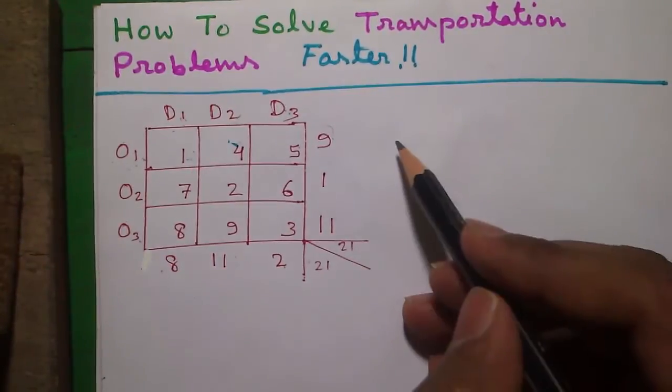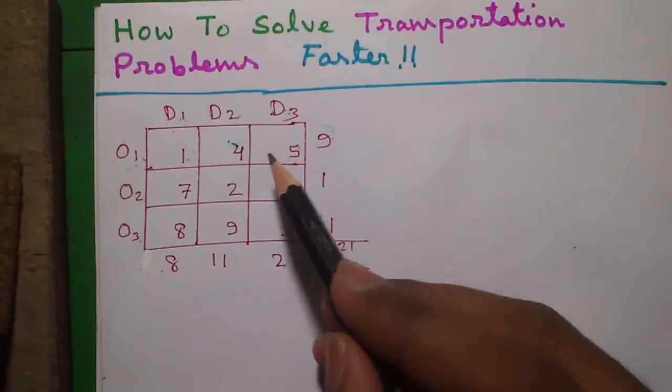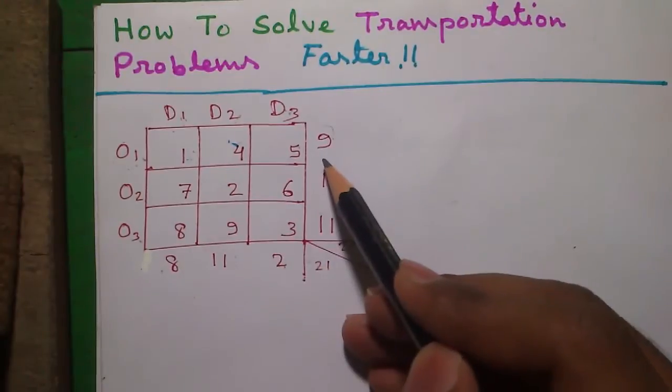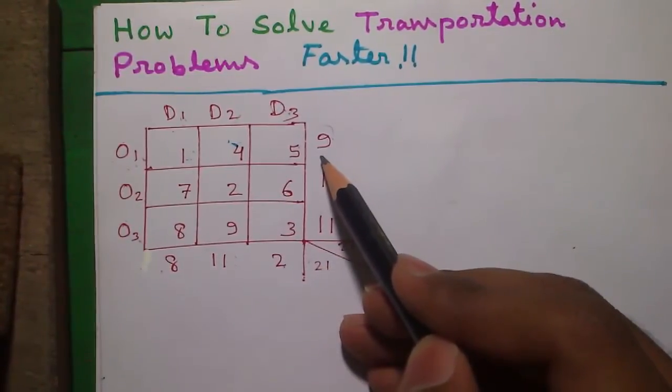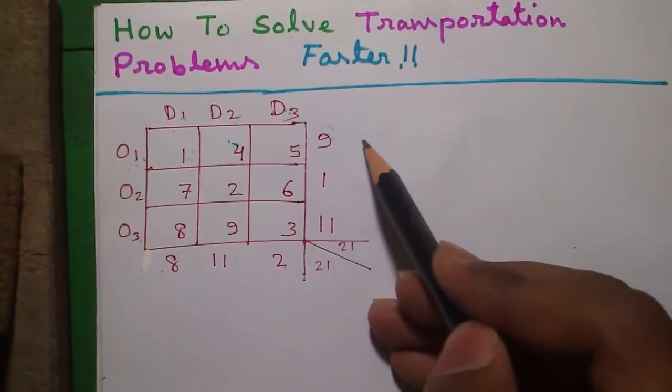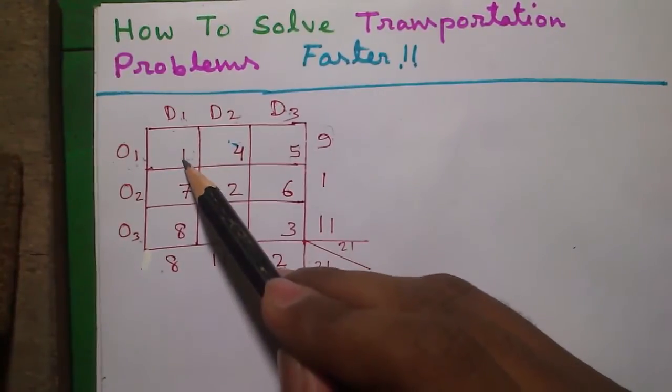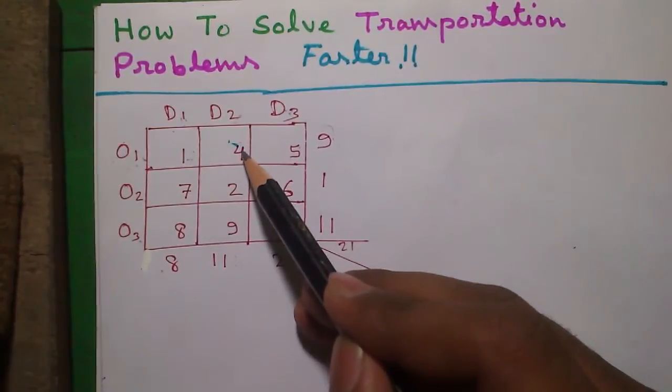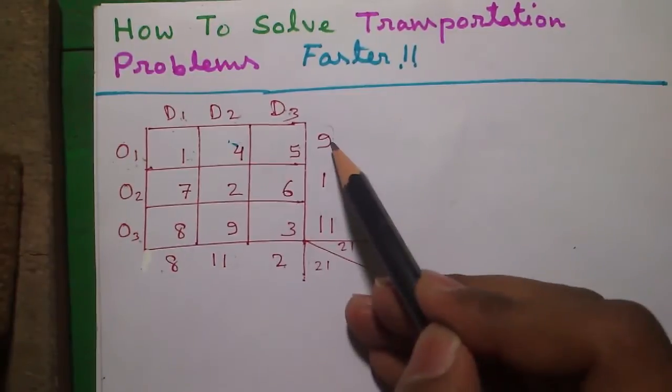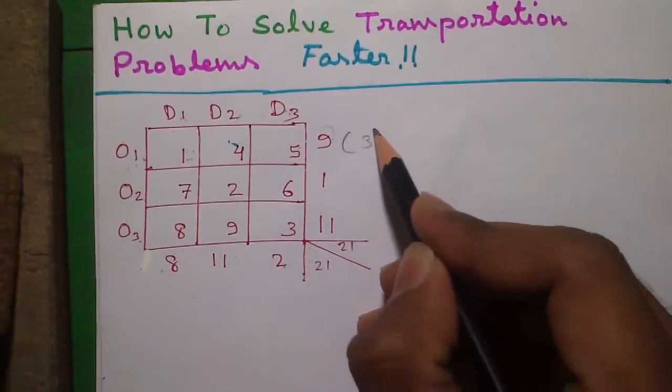Next step is to scan each row and find out the smallest number and next smallest number, and subtract the smallest number from the next smallest number and write in outside bracket. So for row 1 the smallest number is 1 and next smallest number is 4. So 1 is subtracted from 4 and written outside, so it's 3.